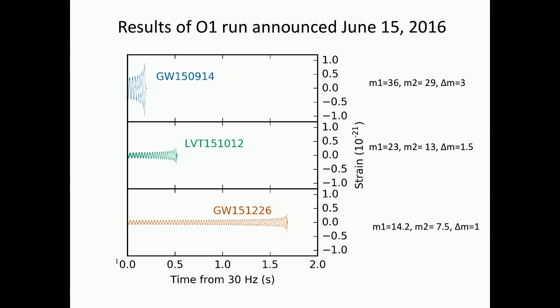By more subtle methods — matching waveforms — you can look deep into the noise and find other sources. Here's the one with masses of 36 and 29 solar masses. The change in mass — the final black hole mass — is not the sum of those two; it's three solar masses less, and all that energy went into gravitational waves. That collision shone more energy into the universe at that instant than all the light, radio waves, and electromagnetic waves in the universe combined — for something like 0.2 seconds.